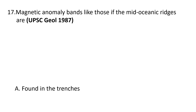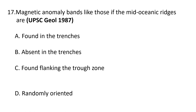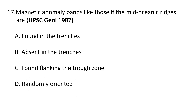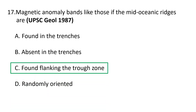Seventeenth question: magnetic anomaly bands like those of the mid-oceanic ridges are — a) found in the trenches, b) absent in the trenches, c) found flanking the trough zone, and d) randomly oriented. The correct answer is c) found flanking the trough zone.